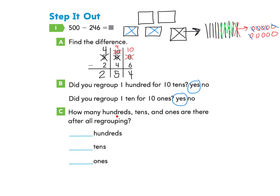Part C asks: how many hundreds, tens, and ones are there after all regrouping? When we look at the hundreds, we regrouped 1, so there were 4 hundreds remaining. When we look at the tens, there were 9 — and we had to regroup 1 of them, so there were 9 tens after regrouping from hundreds. And in the ones column, after regrouping, there were 10 ones.